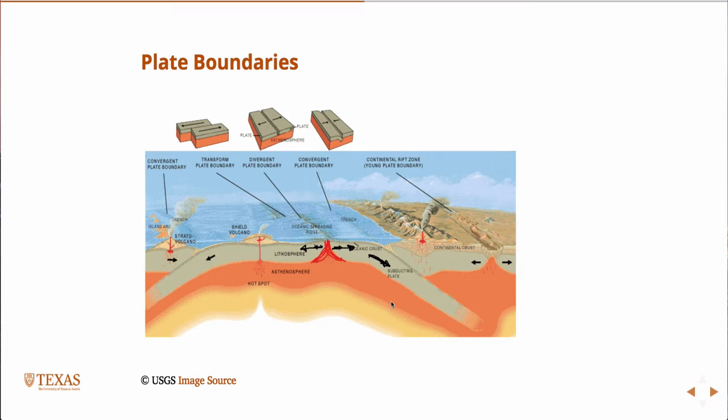And so that allows it to accommodate this motion of subducting under the continental plates. So it's almost always the ocean plates moving under, subducting under the continental plates. And these are called convergent plate boundaries.